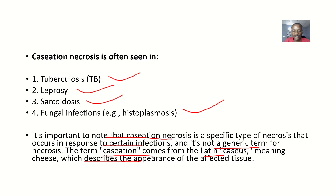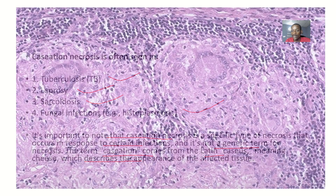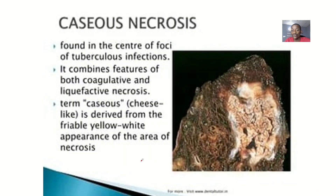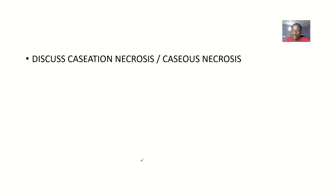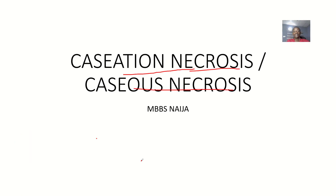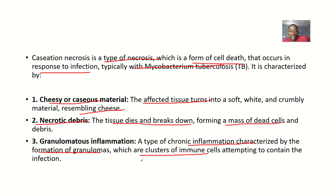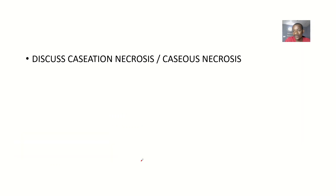The term caseous comes from the Latin word 'caseus,' meaning cheese, which describes the appearance of the affected tissue — it literally looks like a piece of cheese. That covers caseous necrosis: its definition, cause, characteristics, and examples of diseases associated with this type of necrosis.